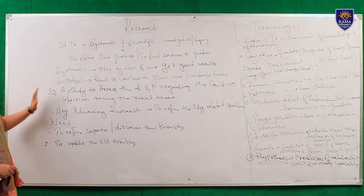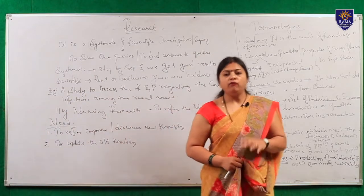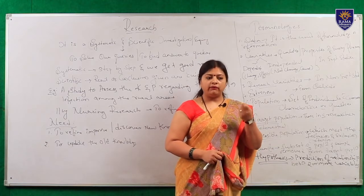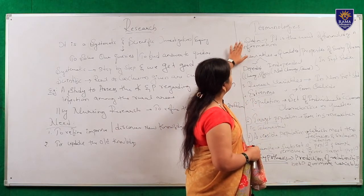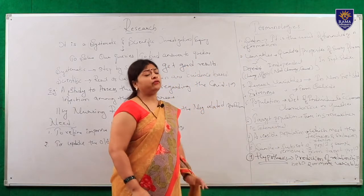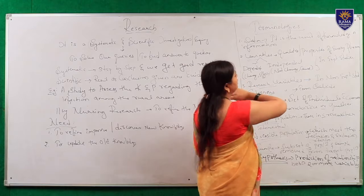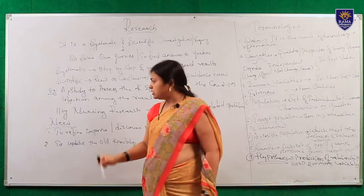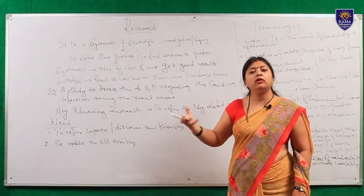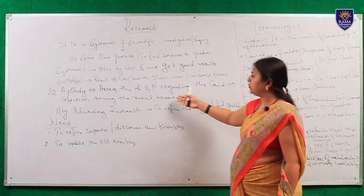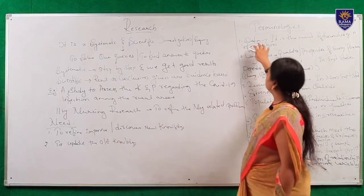Now we will come back and look at the terminologies used in research. The first terminology is data. What is data? Data is the unit of knowledge or information whatever we are collecting. Going back to the same problem - assessing knowledge and practices regarding COVID-19 infections among rural areas - what we are collecting is the data. We are collecting it from rural area people, regarding COVID-19 knowledge and practices. This is our data.